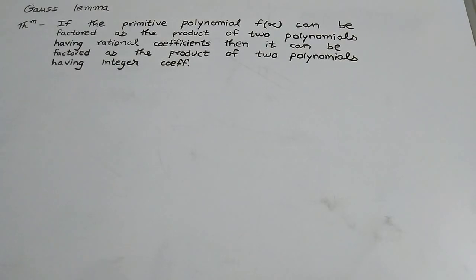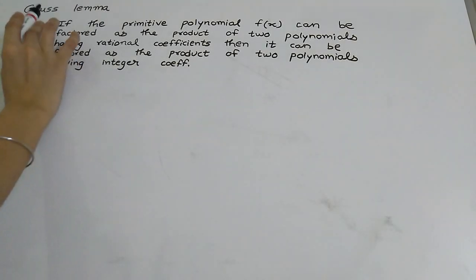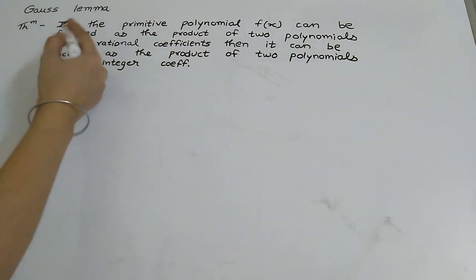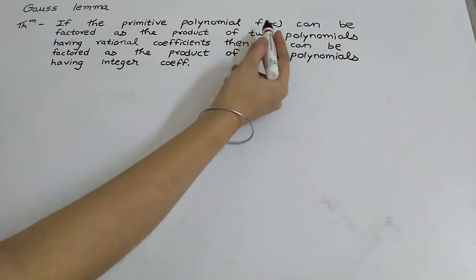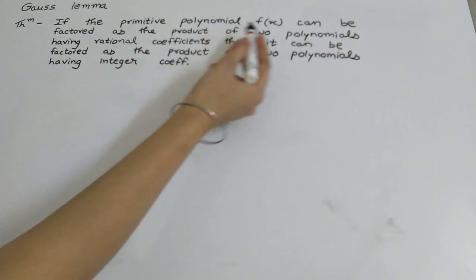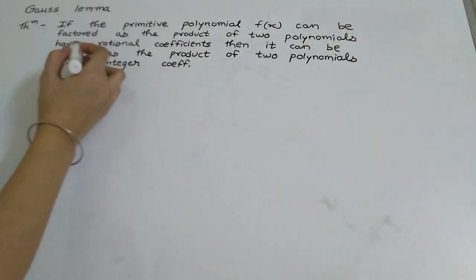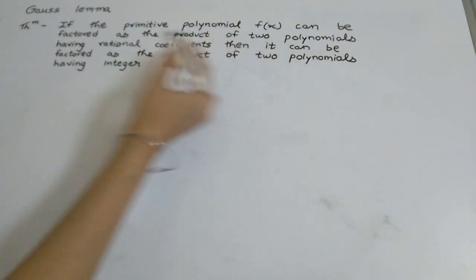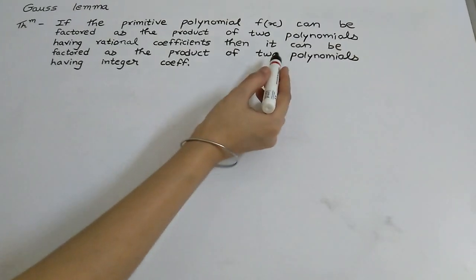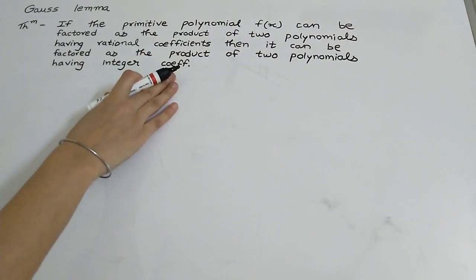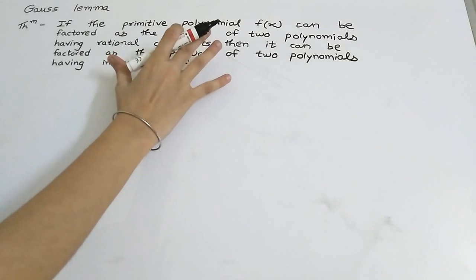Hi guys, welcome to my channel Maths with KM. In this video we are going to learn Gauss's Lemma. Its statement is: if the primitive polynomial f(x) can be factored as the product of two polynomials having rational coefficients, then it can be factored as the product of two polynomials having integer coefficients.